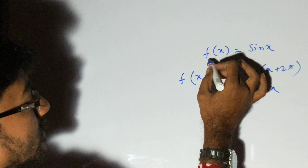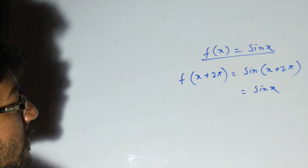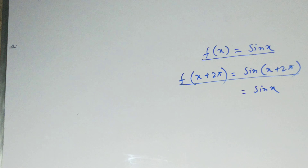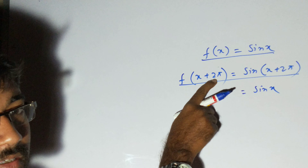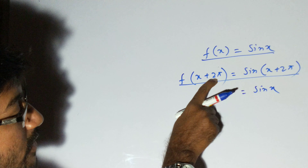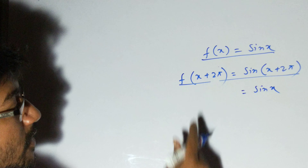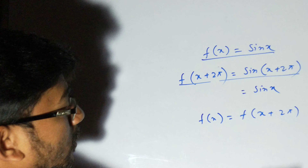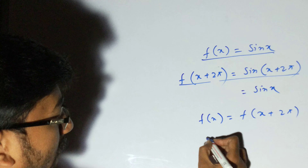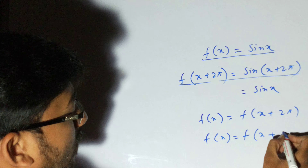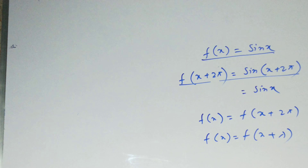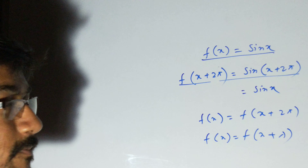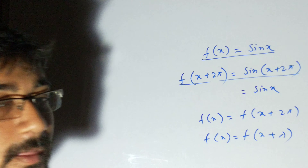But if we add 2π, we get f(x + 2π) = sin(x + 2π) = sin x. So the function repeats itself after the constant value 2π. We can write f(x) = f(x + 2π), which is identical in form to f(x) = f(x + λ). Therefore, sin x is a periodic function, and the period of this function is 2π.